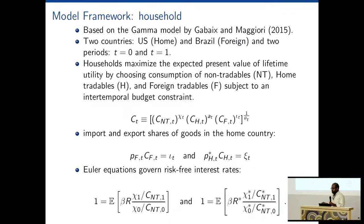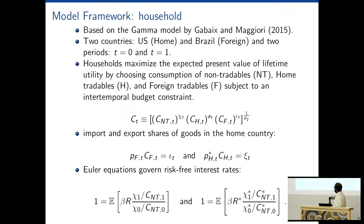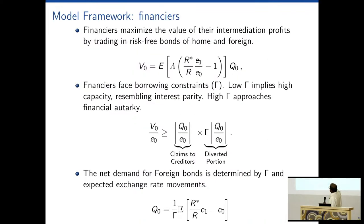To motivate the framework, we have a simple model based on the Gabaix-Maggiori framework. The US is the home country and Brazil is the foreign country. Consumption is a function of non-tradables and home and foreign goods, with trade parameters entering the utility/consumption function. Euler equations follow from this setup. We have an intermediary doing a type of carry trade — essentially short in USD and long in the foreign currency, which is the real in this model.